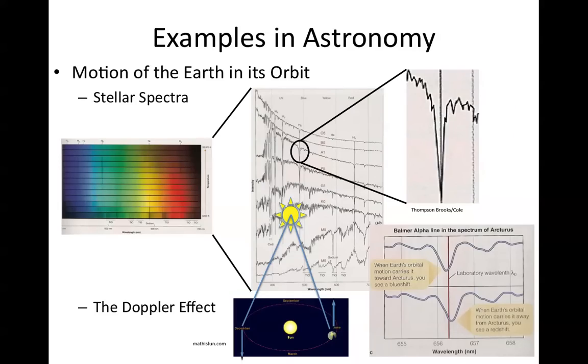So in astronomy there are different types of examples. One is actual motion. I talked before about the Earth's motion around the sun. So here on the left side you see a spectrum of a star. And remember before we talked about how you could plot the spectra as intensity versus wavelength. And here's a plot for different kinds of stars in the middle.